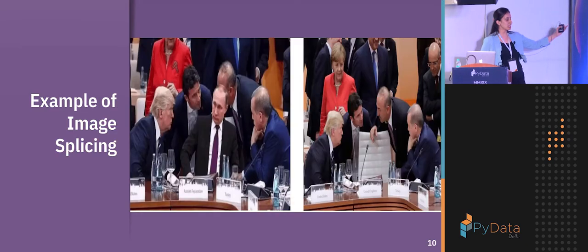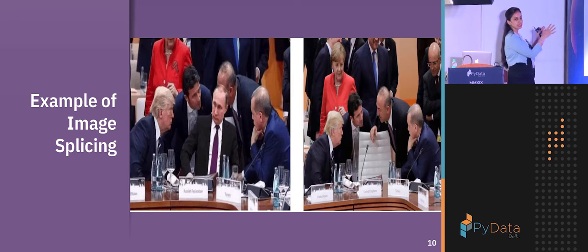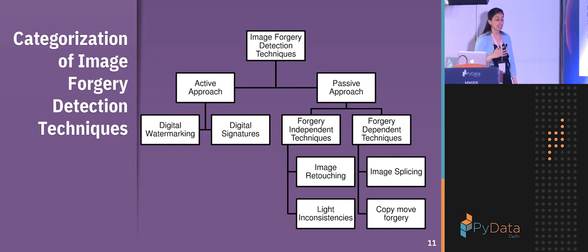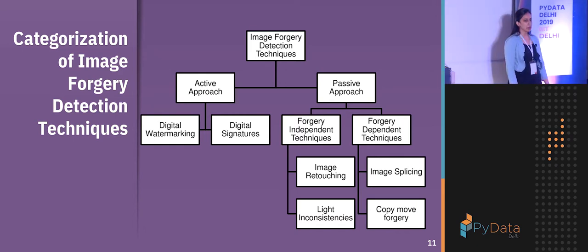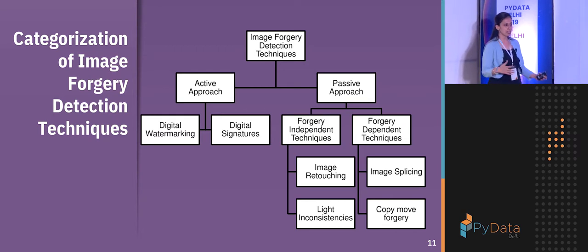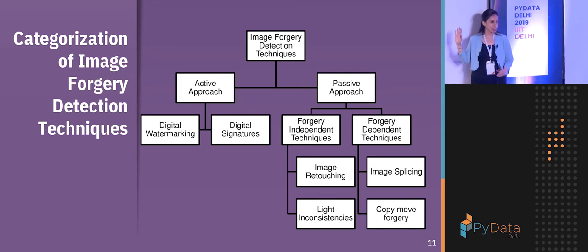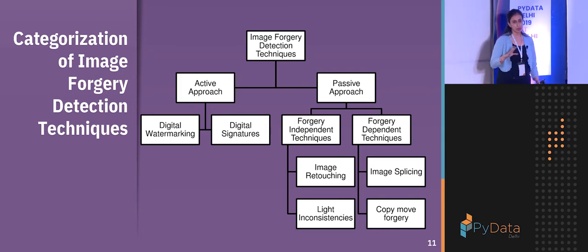Again, the person was not actually sitting there, but a complete person has been made to sit on that chair. These are examples of image splicing. When we work on image forgery — also known as image manipulation or image forgery detection — there are two approaches: one is the active approach, which is more traditional, and another is the passive approach.